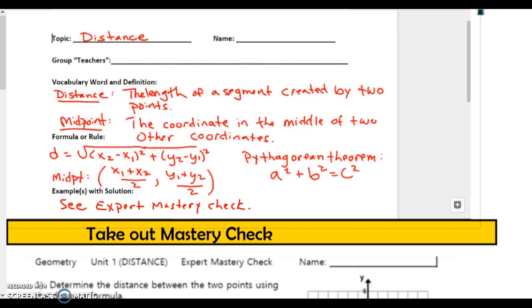Distance is the length of a segment created by two points. Midpoint, the coordinates in the middle of two coordinates. Pause the video now and write the definitions.